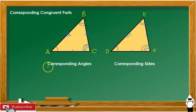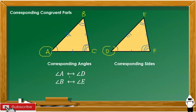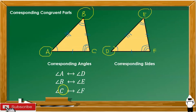First, we are going to look for the corresponding angles based from these two triangles. Angle A corresponds to angle D. Angle B corresponds to angle E. And angle C corresponds to angle F.